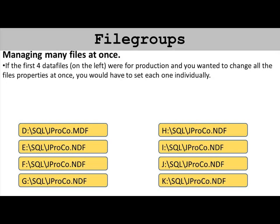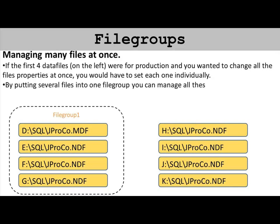File groups have many advantages. Let's say the four data files you see on the left, the D through the G drive, were for production, and you wanted to change all of the properties at once. You'll have a file group one, and you can manage all of those files in that file group at one time.